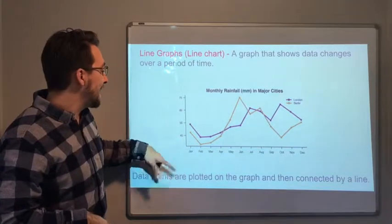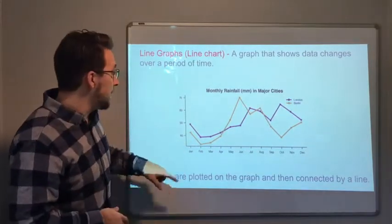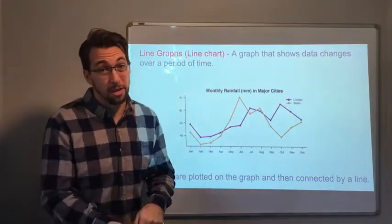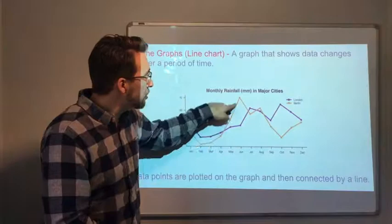Berlin had over 40 millimeters of rain, and then London had 50 millimeters of rain. So that's cool. You can see how the two compare.